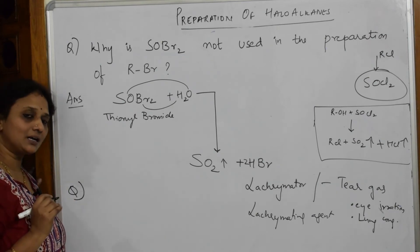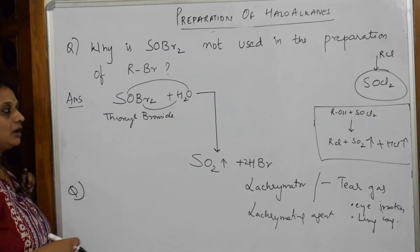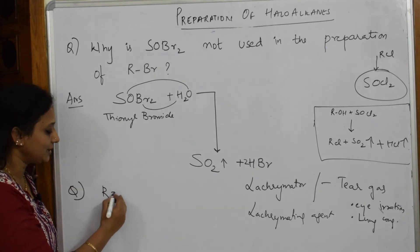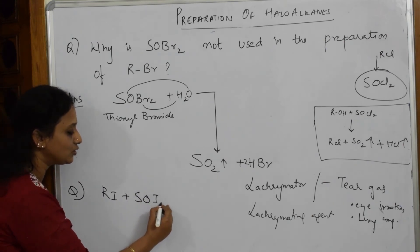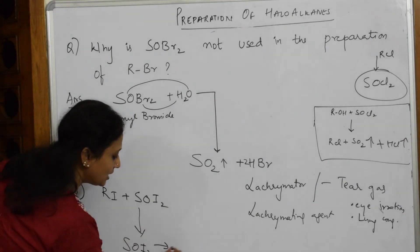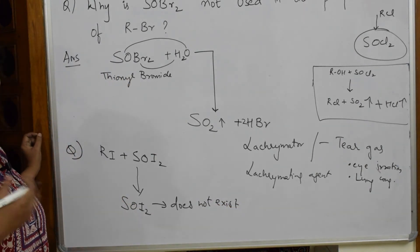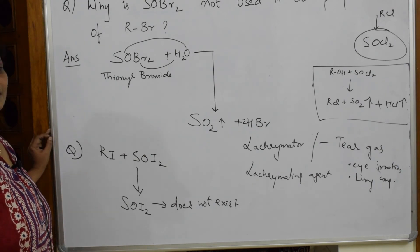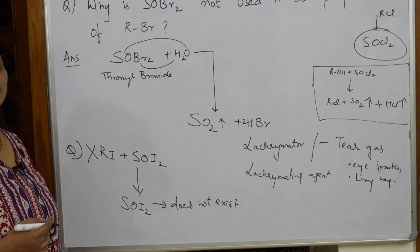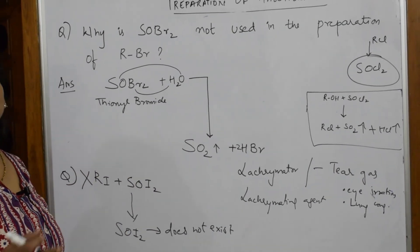Now the question is how to prepare RI. For RCl we used SOCl2, for RBr we would need SOBr2 which is ruled out, and for RI we would need SOI2 — but SOI2 does not exist as a compound. Since this compound doesn't exist, the preparation of RI by this route is not possible. So: RCl — done; RBr — not possible; RI — not at all possible.